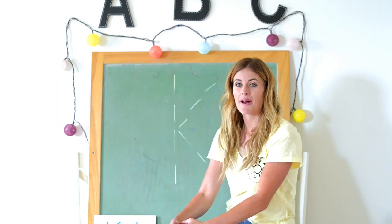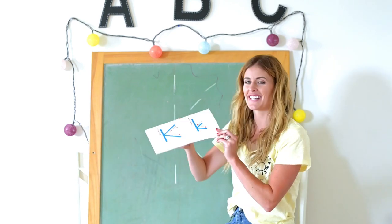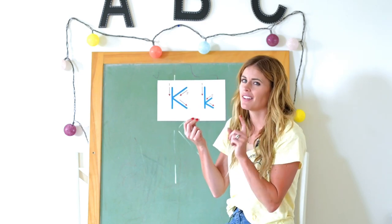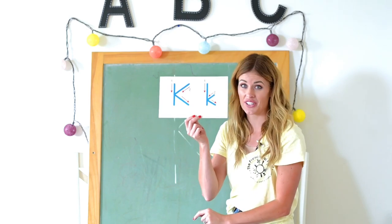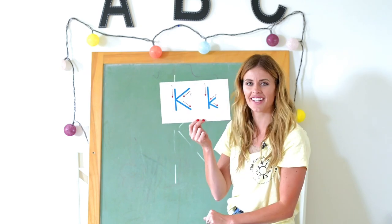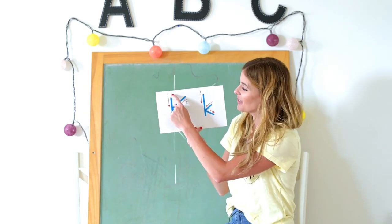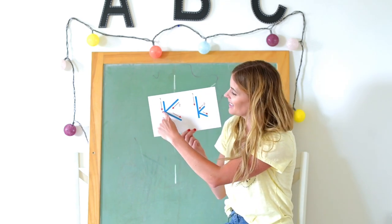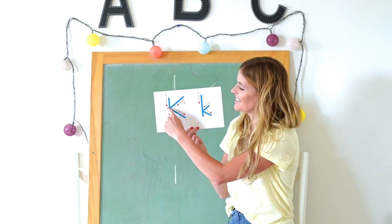Now that we've learned about some animals that start with K, let's learn how to write the letter K. My big K and my little K look almost exactly the same — the only difference is that this one is smaller and has a little more of a straight line on it. What letter features do you see on K? That's right — there are slants on K and one straight line. This is how we write it: down, slant in, slant out.